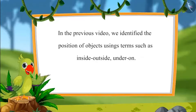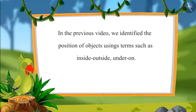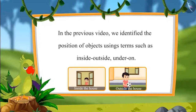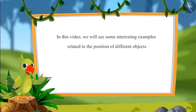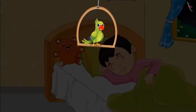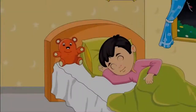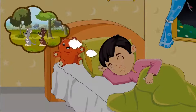So children, in the previous video, we learned how to identify the position of different objects. Today, Chotu went to see a movie with his family and he loved the movie. On reaching home, he was so tired that he immediately went to bed and when he was sleeping, he saw few of the characters of the movie in his dream.